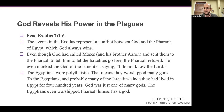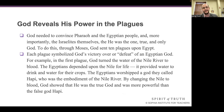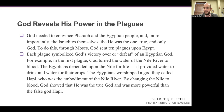To the Egyptians, and probably many of the Israelites since they had lived in Egypt for 400 years, the Lord God, Yahweh, was just one of many gods. The Egyptians even worshipped Pharaoh himself as a god. And so God needed to convince Pharaoh and the Egyptian people, and more importantly, the Israelites themselves, that he was the one true and only God. To do this through Moses, he had to win some battles. God sent 10 plagues upon Egypt.